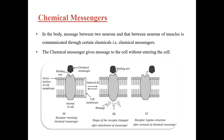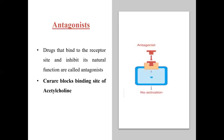So we have seen the receptor and how messages are transferred from one neuron to another. Some drugs act upon the receptor. How do drugs act upon the receptor? We have seen drug-enzyme interaction, and now we will see drug-receptor interactions.